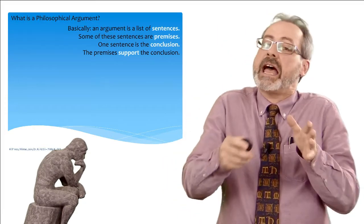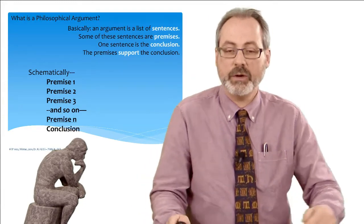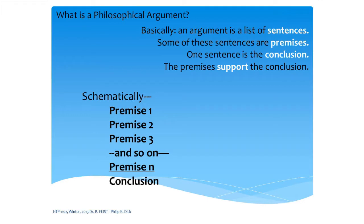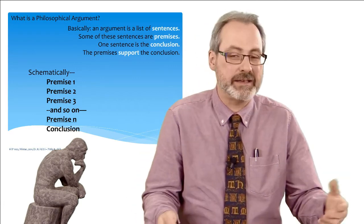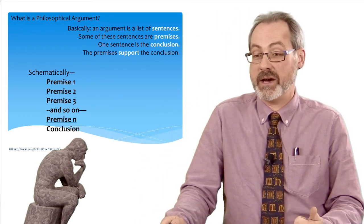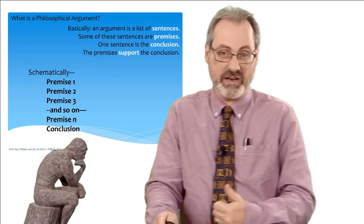Schematically, you have premise one, premise two, and so on down to premise N — whatever N happens to be, 10 or 20 or 3 or 6. So you have your set of sentences, those are the premises, and they support a conclusion, which is another sentence. What do we exactly mean by a conclusion? What do we mean by a premise? What do we mean by a sentence? And what does it mean for sentences to support other sentences? Those are important ideas we should have some clarity on.